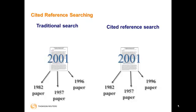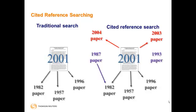Traditional searching only allows navigating backwards in time. Cited reference searching starts with a known work and is capable of moving forward in time to find new articles. The use of cited references also enables you to locate related articles that cite references in common with the parent article.